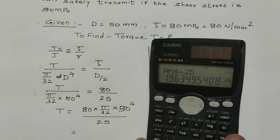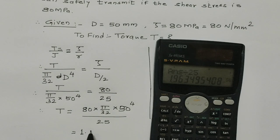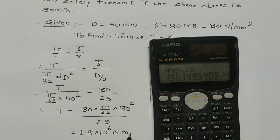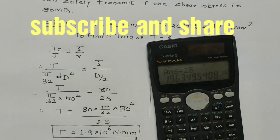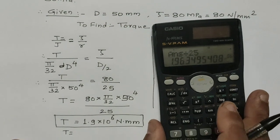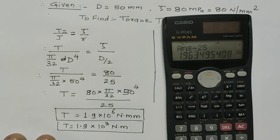We will get 1.963, or in engineering notation 1.96×10⁶ Newton millimeter. This T will mean Newton millimeter. We can convert it into Newton meter by dividing by 1000, so T is equal to 1.9×10³ Newton meter.